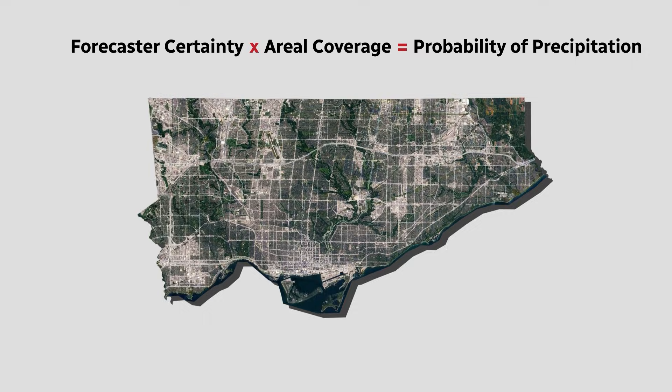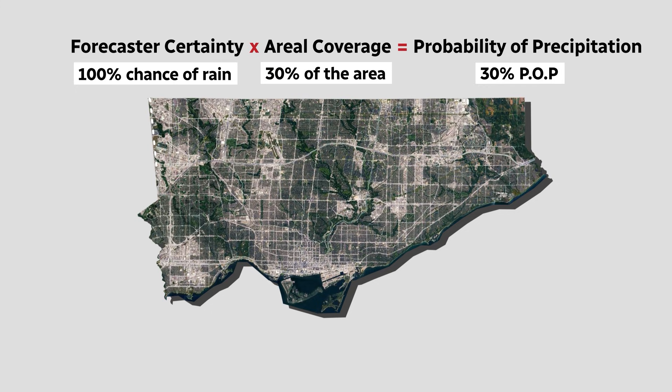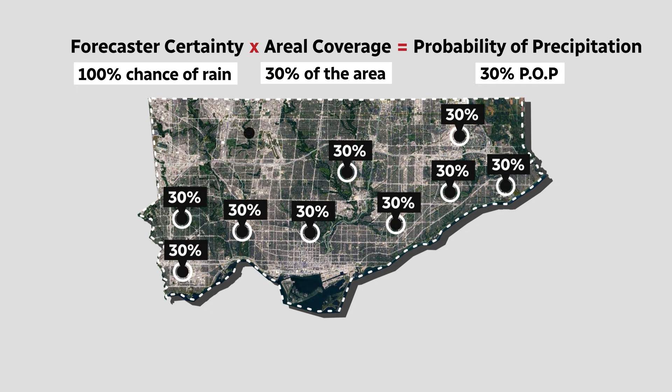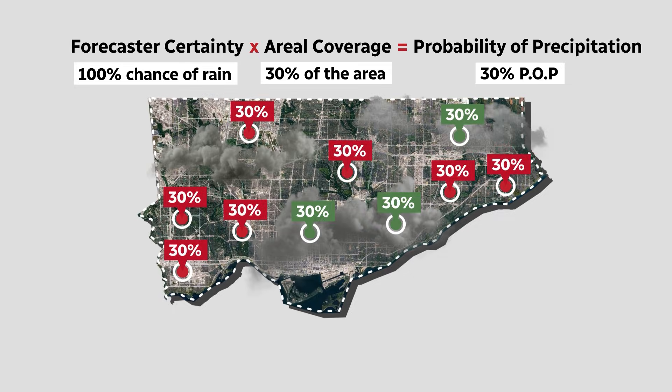Still confused? A 30% chance of rain this afternoon in Toronto means anywhere I am standing outside in Toronto this afternoon, there is a 30% chance I'll get wet.